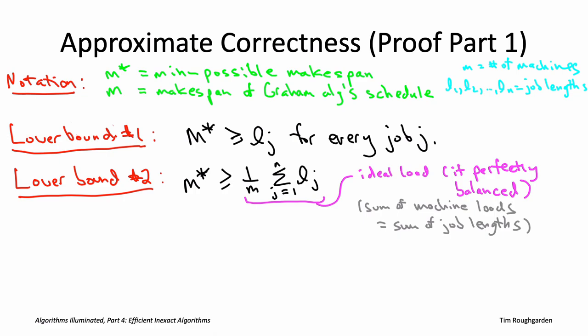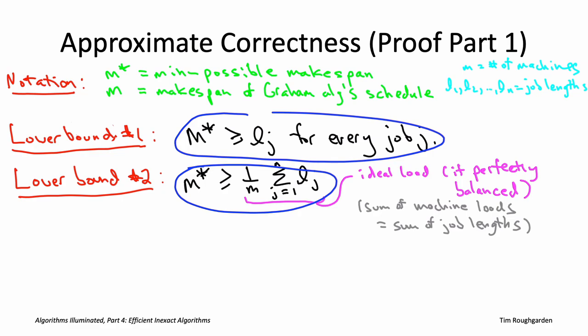We've introduced two simple intermediate quantities and related both to the minimum possible makespan — specifically, each can only be less than M star. What remains is to relate the makespan capital M of Graham's algorithm to these same two intermediate quantities. Let me circle the key inequalities, which will be used crucially in the proof on the next slide.